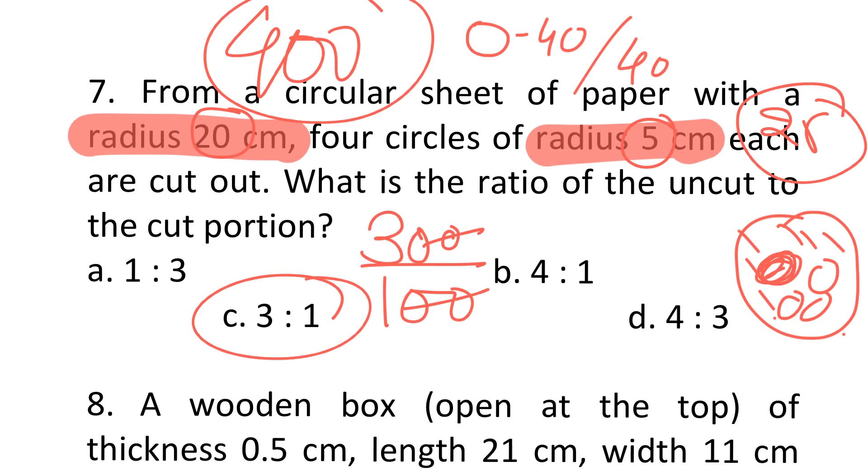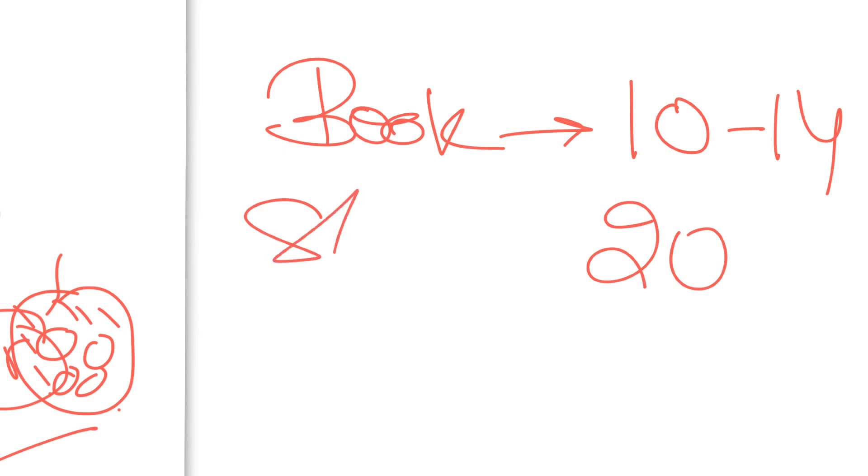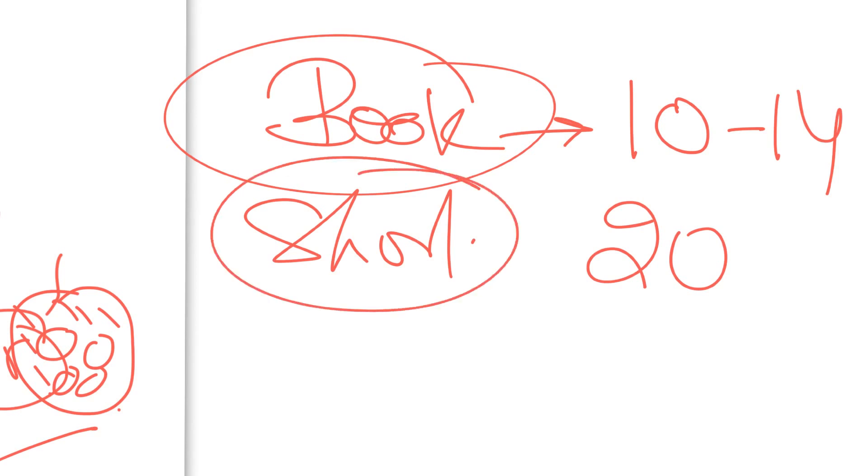I have to use all these shortcuts in the exam. Book-based questions in which I just need the formula will be around 10 to 14 questions, and 20 questions I can use shortcuts. Book-based question problem is if you know the formula you can solve, if you don't know the formula it's impossible. But in shortcuts I can use common sense, some way out to solve the question. Out of 34 questions last year, I could use shortcuts in 20 questions.